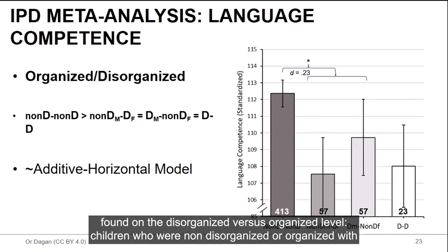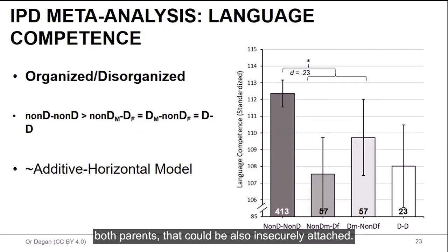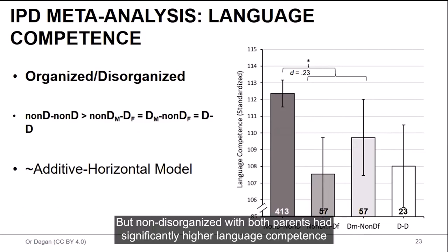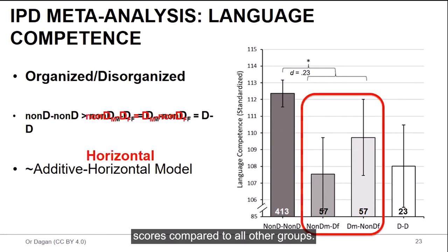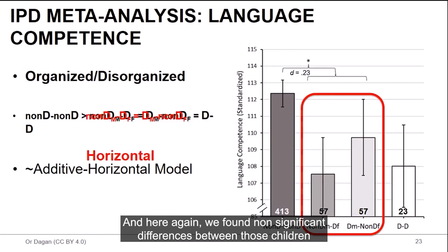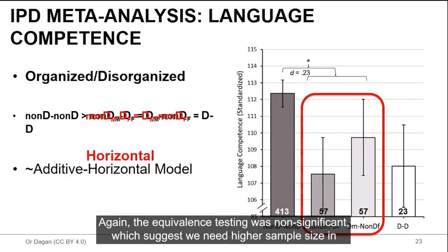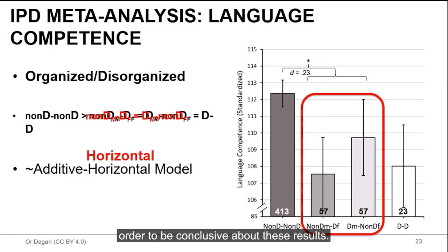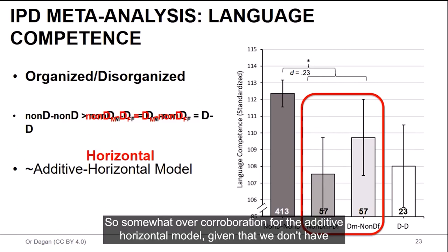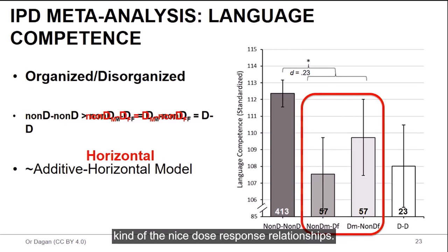Similar results found on the disorganized versus organized level. Children who were non-disorganized or organized with both parents, that could be also insecurely attached but non-disorganized with both parents, had significantly higher language competence scores compared to all other groups. And here again, we found non-significant differences between those children who were disorganized only with dads and those children who were disorganized only with moms. Again, we ran equivalence testing. Here again, the equivalence testing was non-significant, which suggests we need higher sample size in order to be conclusive about these results. So somewhat of a corroboration for the additive horizontal model, given that we don't have the nice dose-response relationships.